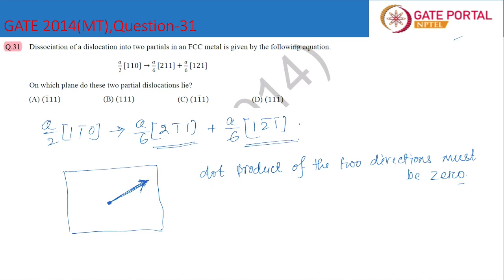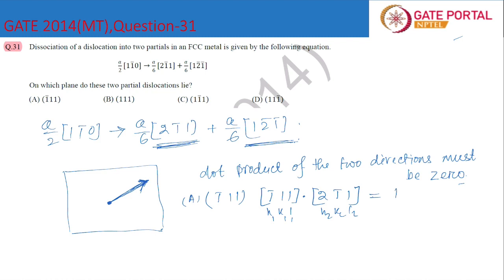We will check which option gives a dot product of zero for both directions. For option A, the (1̄11) plane, the normal direction is [1̄11]. Taking the dot product with [21̄1]: it equals minus 2 minus 1 plus 1, which is not equal to zero.